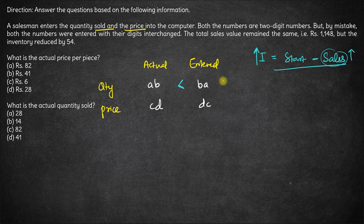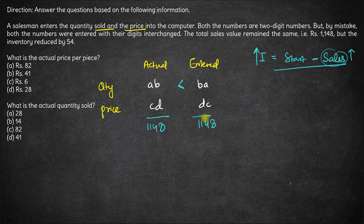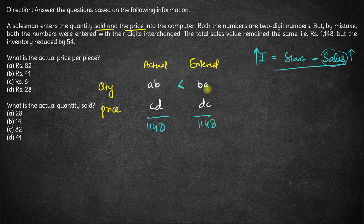We are also given that the product of actual price and actual quantity is 1148, and the product of entered quantity and entered price is also 1148 — the total sales amount is the same. So if AB is less than BA and the product of these two is the same as the product of those two, then CD must be greater than DC. This is for sure.